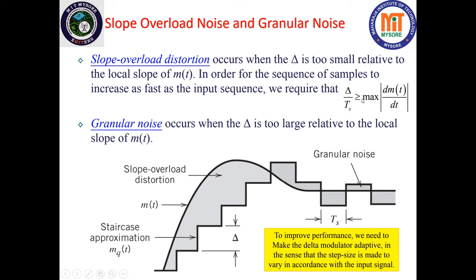Slope overload distortion can be overcome by satisfying the condition: delta divided by T_s must be greater than or equal to the maximum rate of change of the message signal. If this condition is satisfied, there will be no slope overload distortion. The second quantization error in delta modulation is granular noise, which occurs when delta is too large relative to the local slope of m(t). Here the slope is smaller compared to the delta value, and thereby noise — called granular noise — is observed.